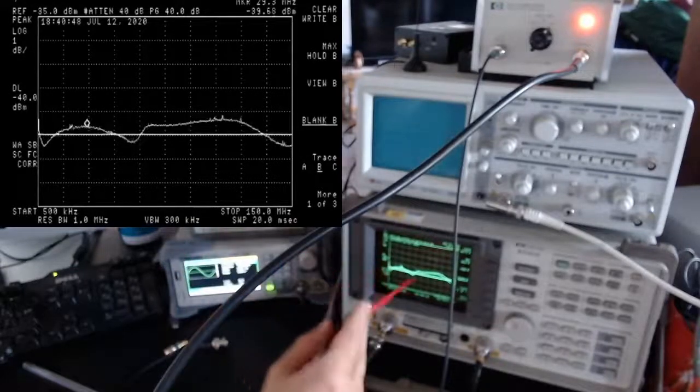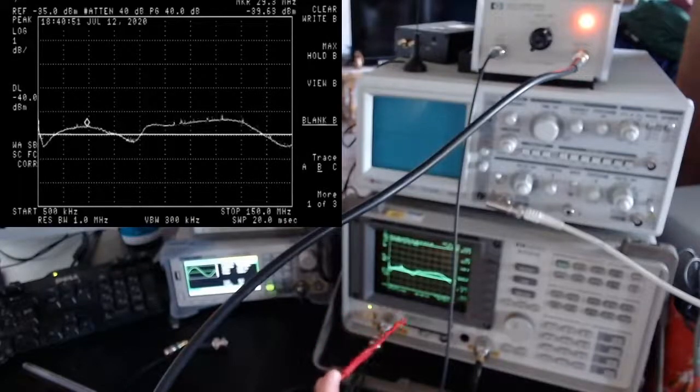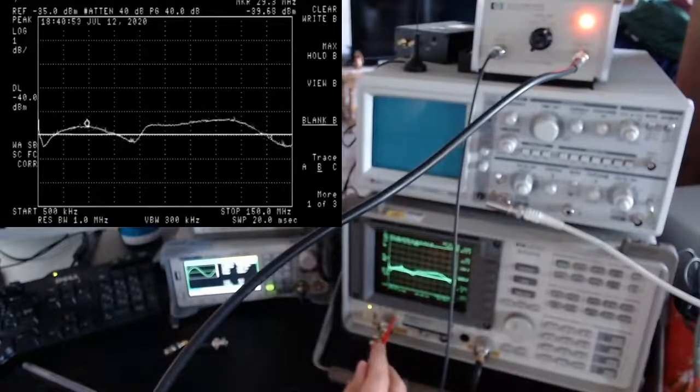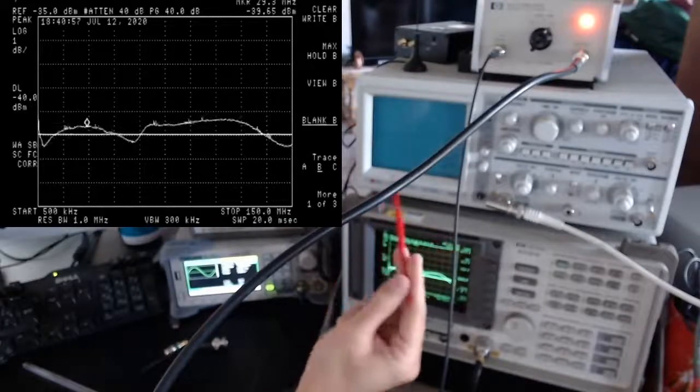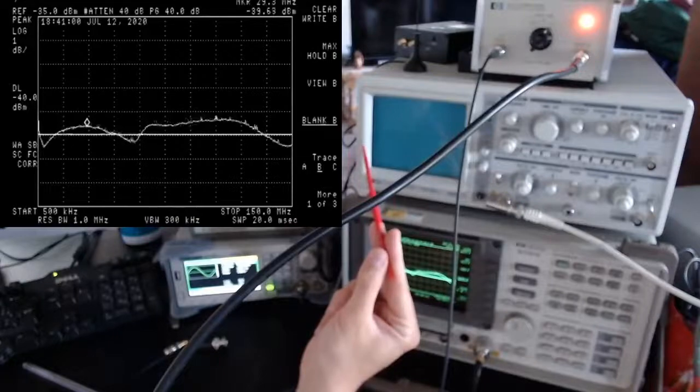So here what you can see is the response of the amplifier to a stimulus coming from the tracking generator. And the amplifier is correctly amplifying the signal about 40 dB.